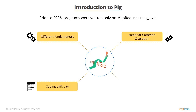Also, data flow in MapReduce was quite rigid, where the output of one task could be used as the input of another. To overcome these issues, PIG was developed in late 2006 by Yahoo researchers. It later became an Apache open-source project.